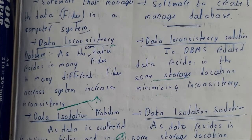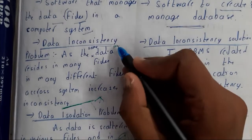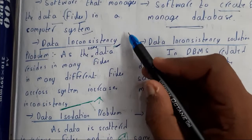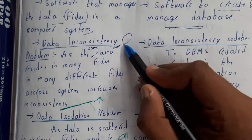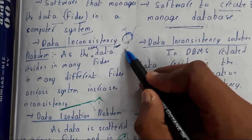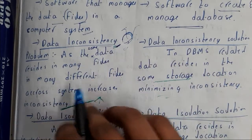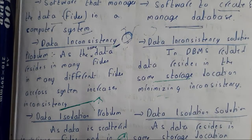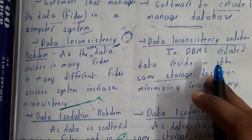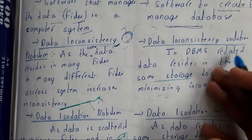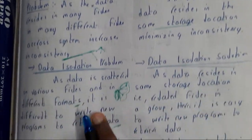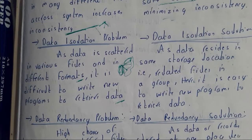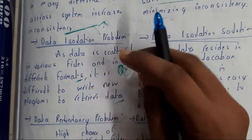Data inconsistency means we will have multiple copies of a particular file in different locations — that is possible in file system. Whereas in DBMS, the whole database is stored at a particular location, so data consistency is a solution found in databases, while it is a problem in file system.